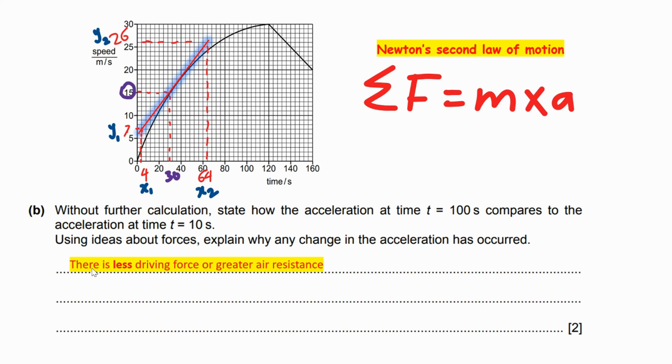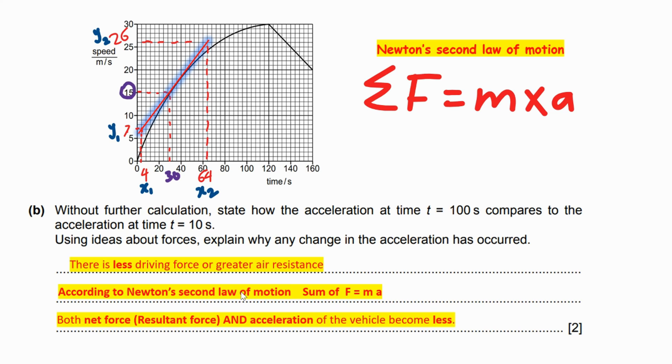So according to Newton's second law of motion, I want to advise my students to use evidence to show the examiner that you know the link behind the scene, or there is a mathematical expression. Sigma F equals m times a, both net force, resultant force and acceleration. This one must be written and it means you show the examiner they are linked together of the vehicle.